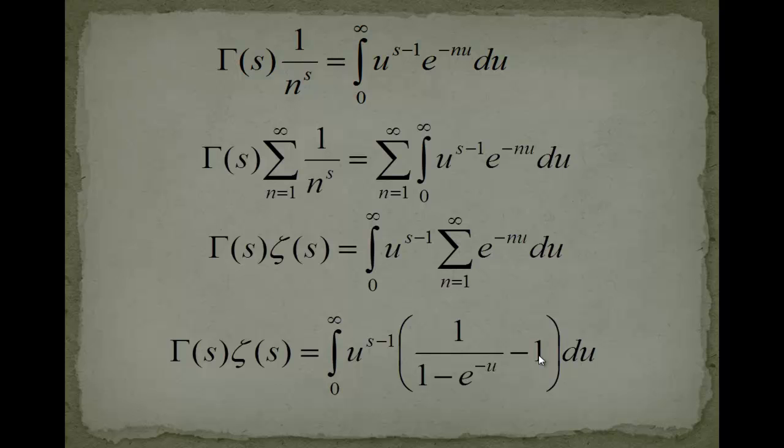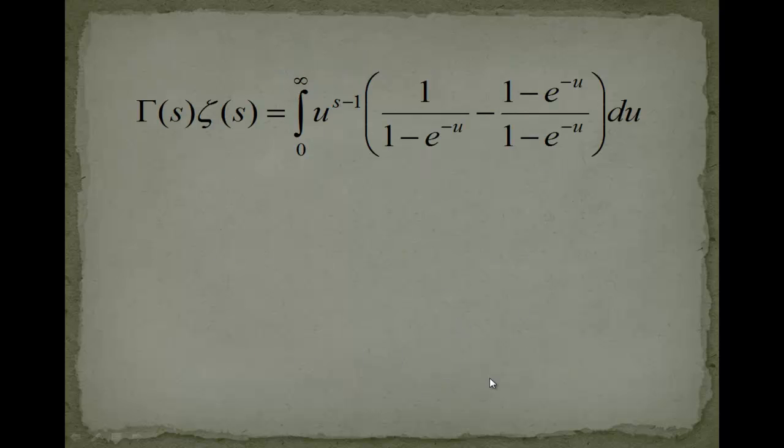Now you see this is looking pretty similar to the stuff that we had in the first page. I take this one and just bring in the common denominator, so we have 1 minus e to the minus u in both numerator and denominator. Now we can take both parts and add them together. In the numerator we get 1 minus 1, which gives us 0, and minus minus e to the minus u will give you plus e to the minus u. In the denominator: 1 minus e to the minus u.